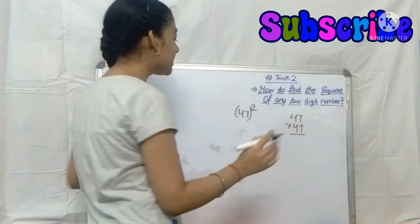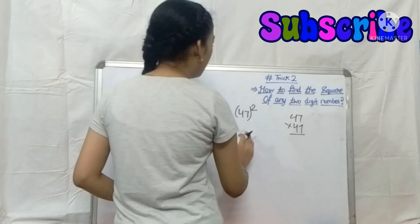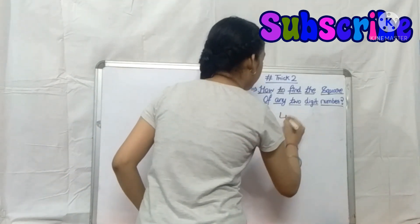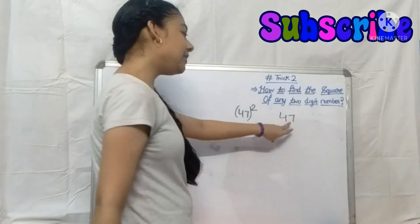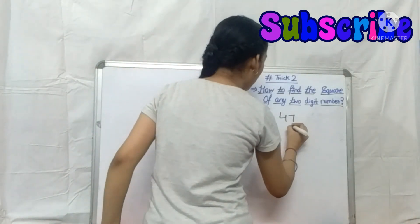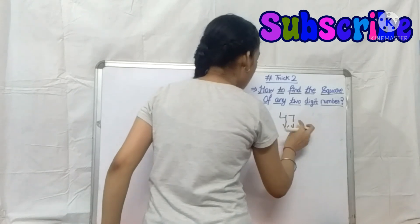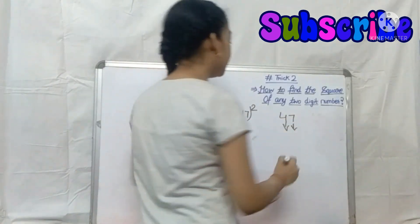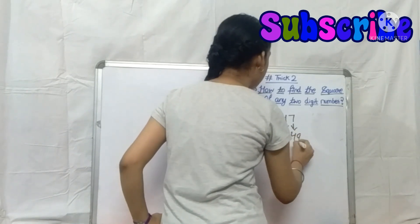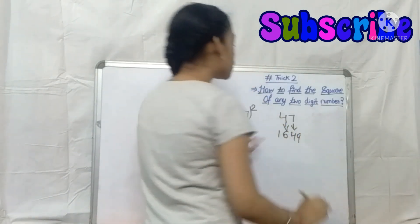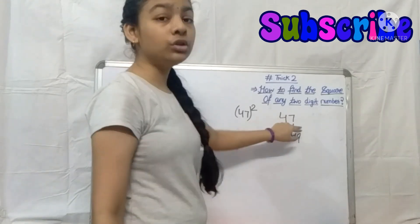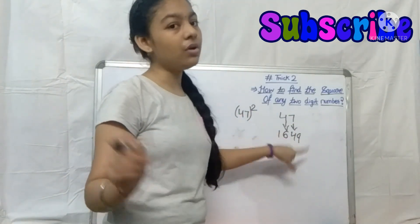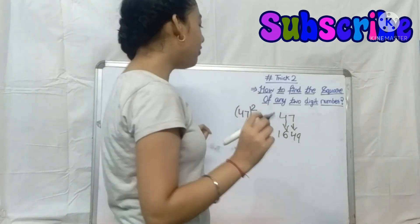So for 47, the first step is: we are going to write the square of each digit separately — the square of 7 and the square of 4. So 7 squared is 49 and 4 squared is 16. We write these together as 1649, placing 4 squared first and 7 squared second.